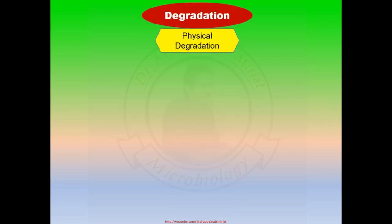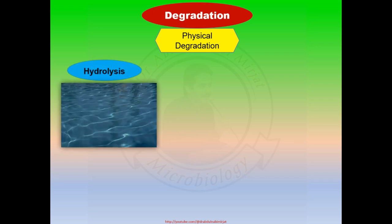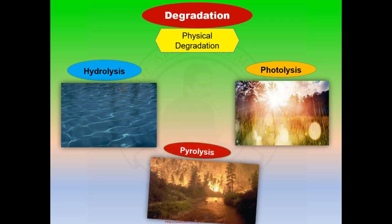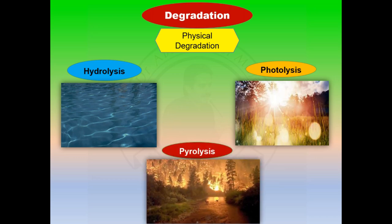Among the physical degradation types: hydrolysis means the breakdown of pesticides by water; photolysis means the degradation of pesticides by sunlight and other types of light; and pyrolysis means the degradation of pesticides by heat or fire.